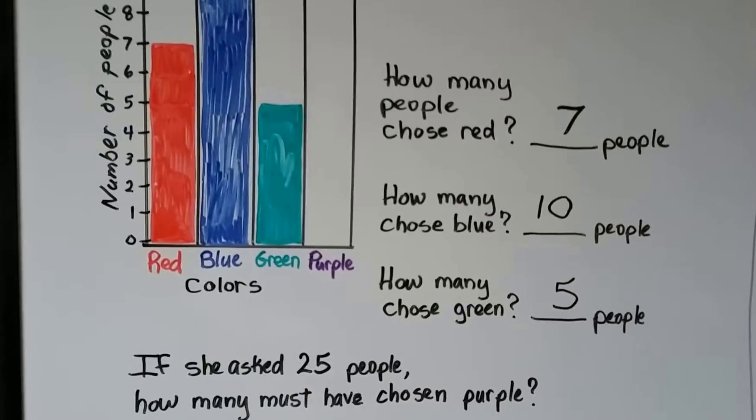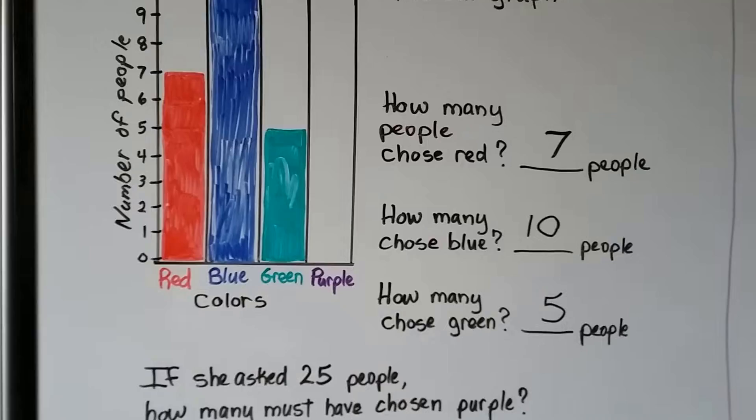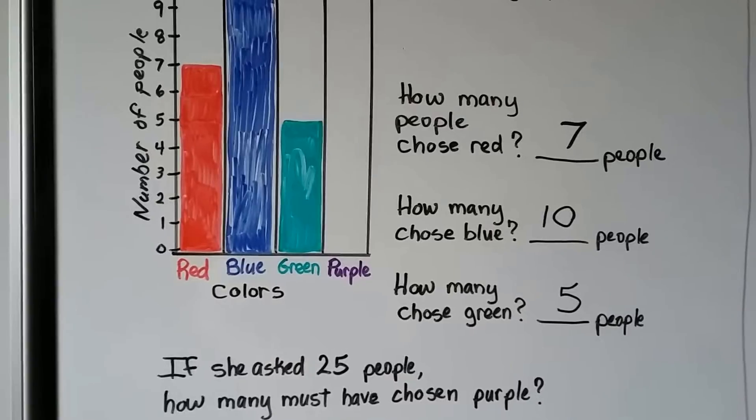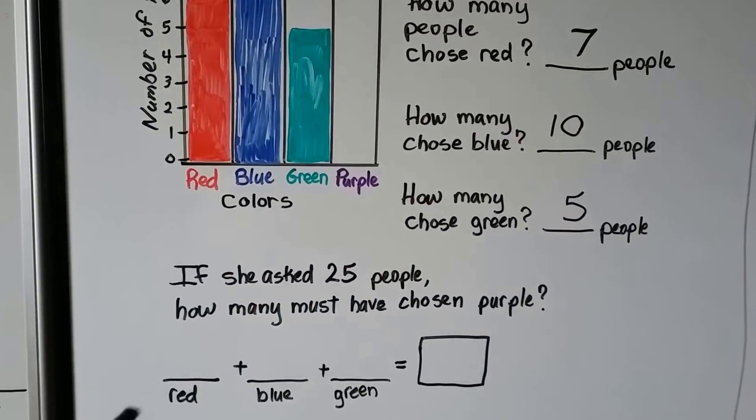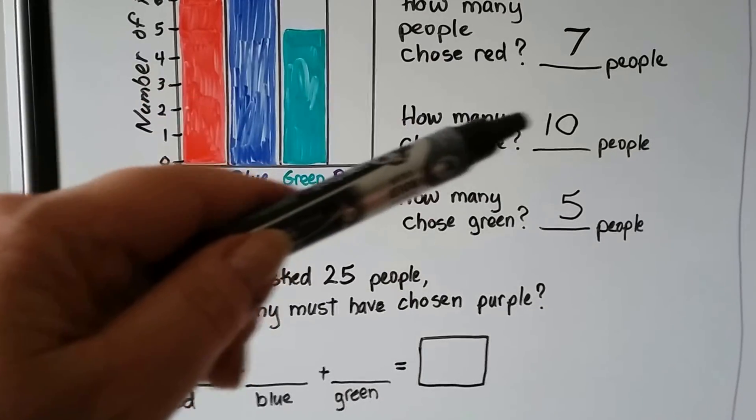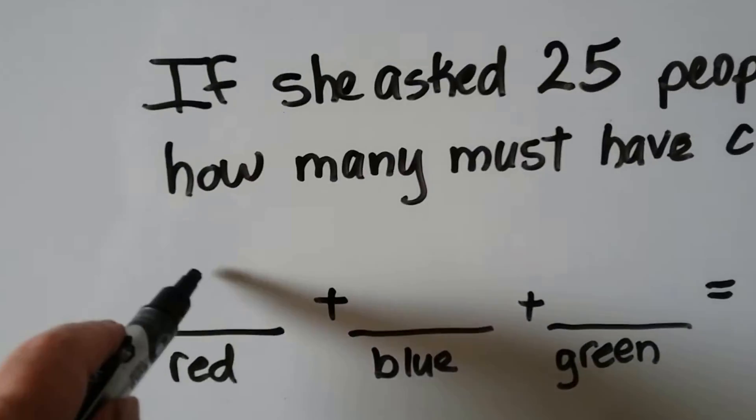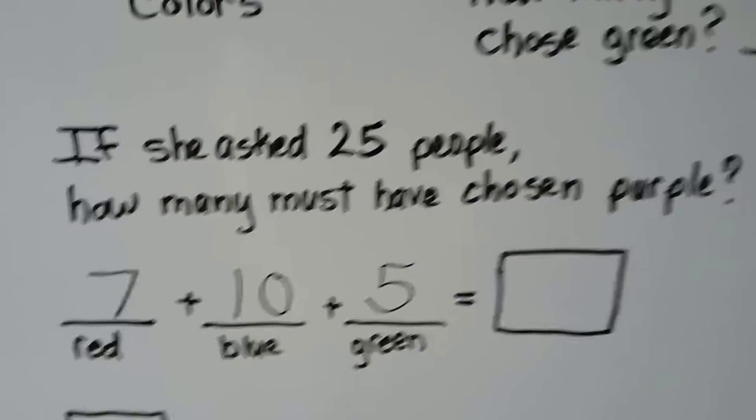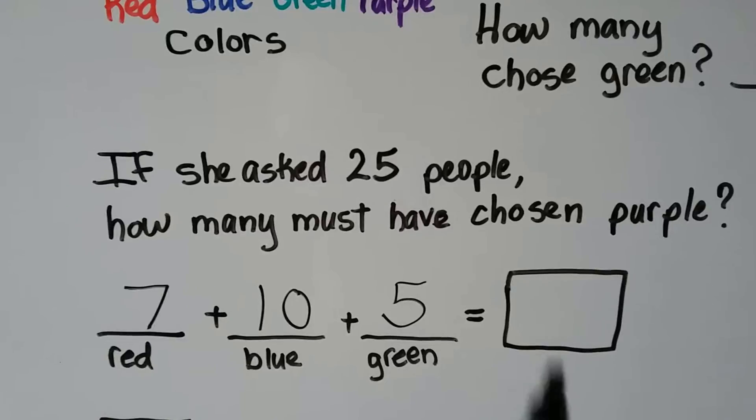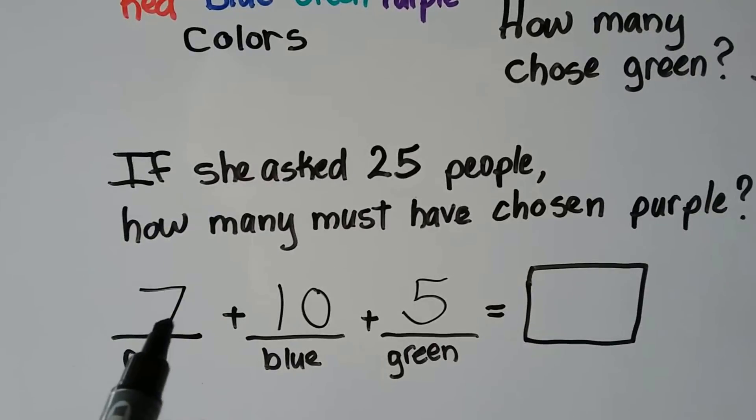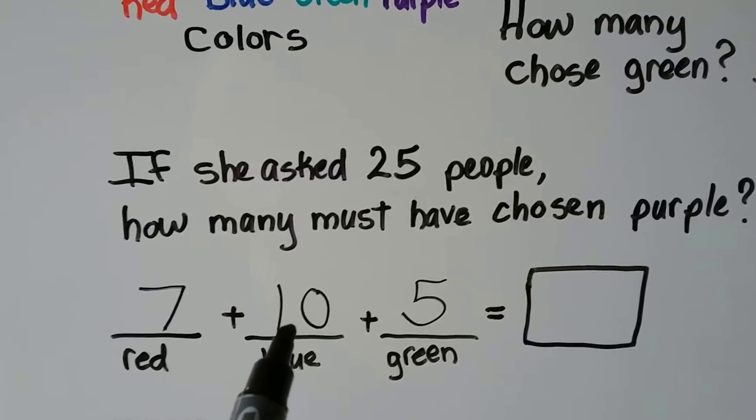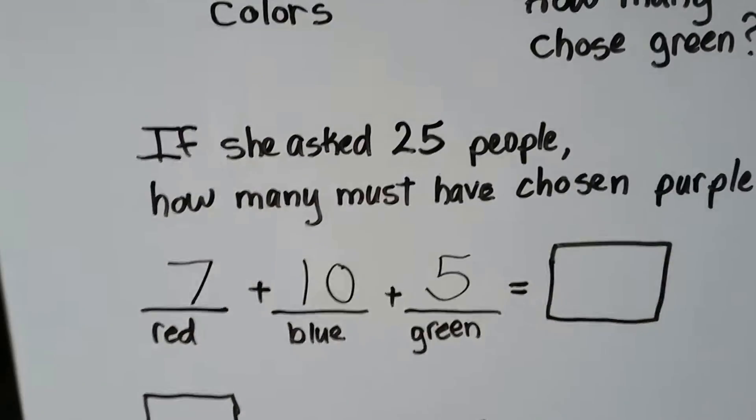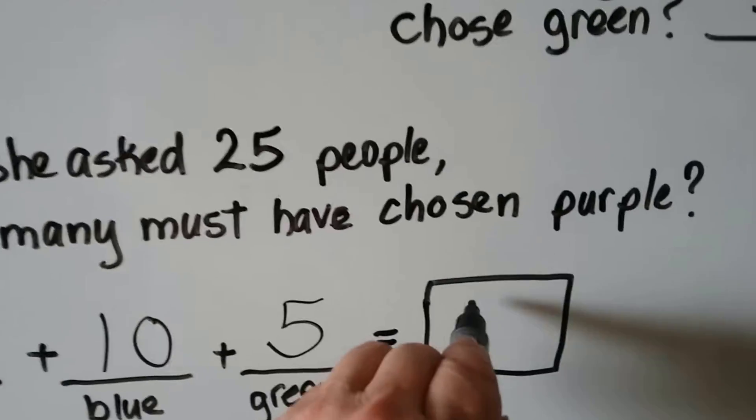If she asked 25 people, how many must have chosen purple? What we can do is total these, find out how many there are, and see how many we need to get to 25. We add the seven plus ten plus five. There were seven red, ten blue, and five green. We find out how many they are. We get the sum. Ten plus seven ones is seventeen. Seventeen, seventeen plus five more. We can count on. Seventeen, eighteen, nineteen, twenty, twenty-one, twenty-two. So for these three colors, there's twenty-two answers.